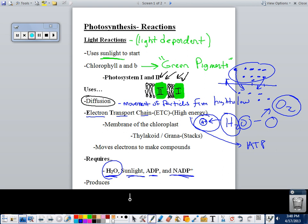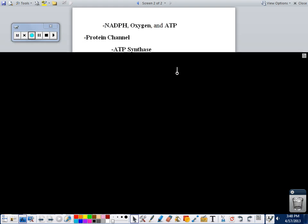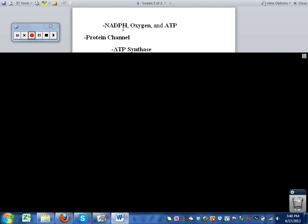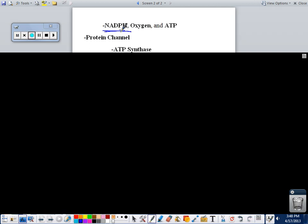At the end, it produces NADPH, oxygen, and ATP. So at the end of light reactions, we have NADPH, which is then going to be used in the dark reactions, oxygen which is a byproduct, and then ATP which will also be used in the light-independent reactions.